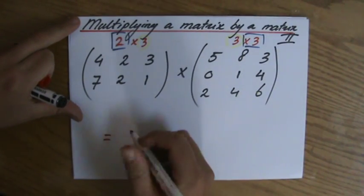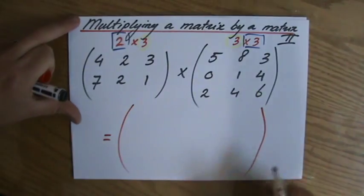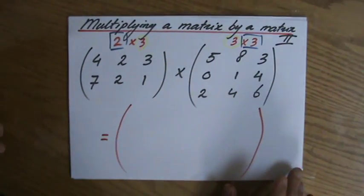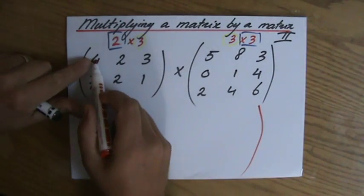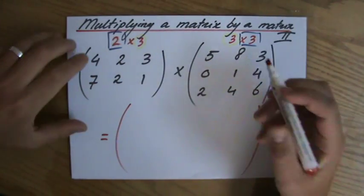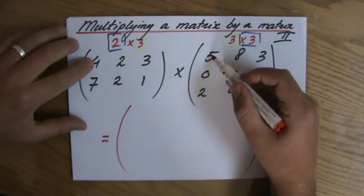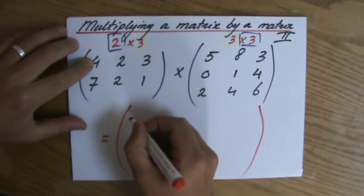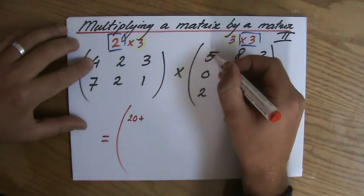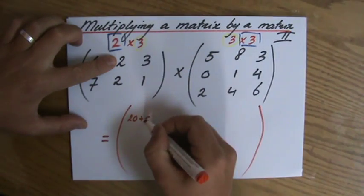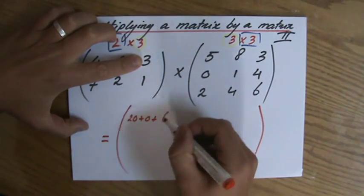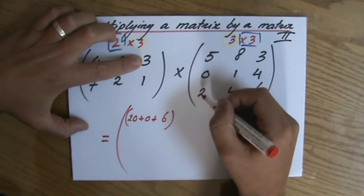Now just to save myself some space, I'm going to skip a few steps, so really listen carefully, and hopefully you have seen my first video on this already. I said we're going horizontally in the first matrix and vertically in the second. So if I'm multiplying, I have 4×5, which is 20, plus 2×0, which is 0, plus 3×2, which is 6. There we go, that's my first number.